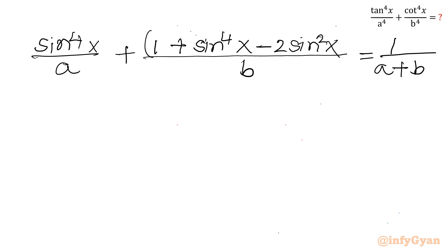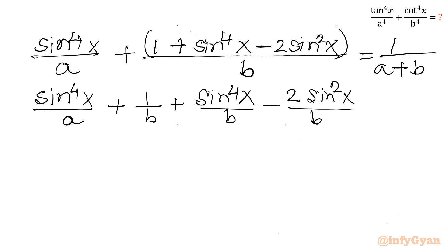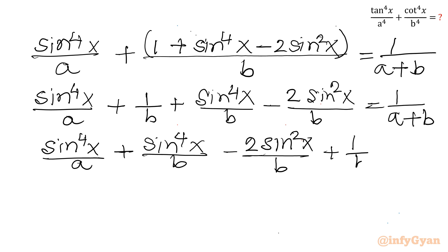Now let us split the numerator bracket. We get: sin⁴x / a + sin⁴x / b + 1/b − 2sin²x / b = 1/(a+b). Rearranging, we can write: sin⁴x / a + sin⁴x / b − 2sin²x / b + 1/b − 1/(a+b) = 0.